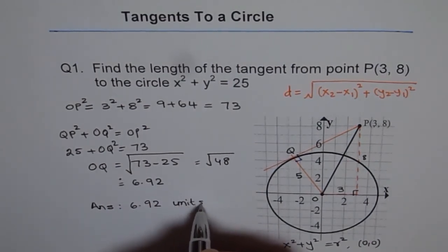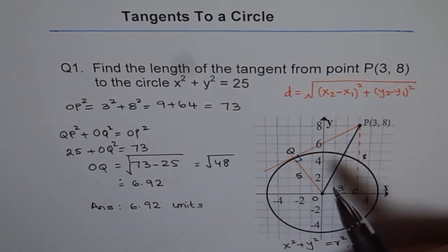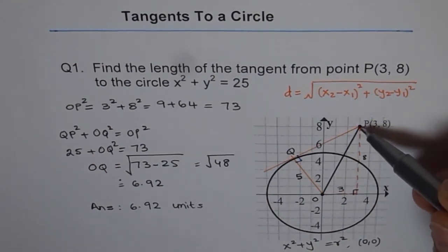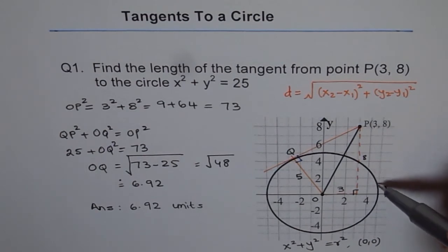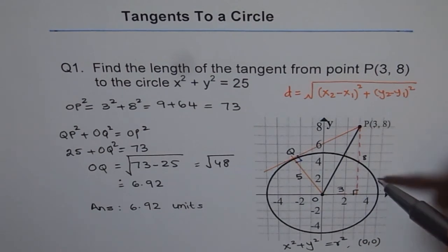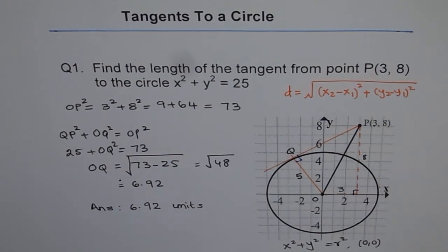So the beauty here is that we don't really have to find the point Q. It could be any point. Another important thing for you to note is that from this external point, you can always draw two tangents. So you could have drawn a tangent on this side, which will be kind of symmetrical to this side and get the same result.